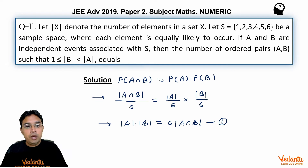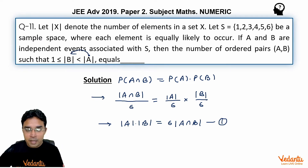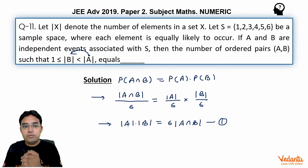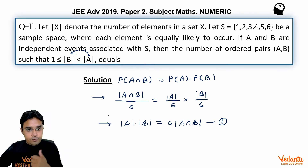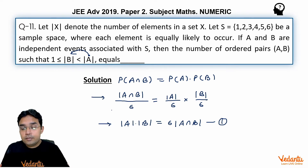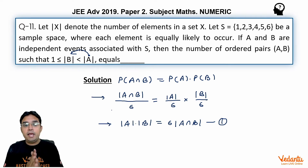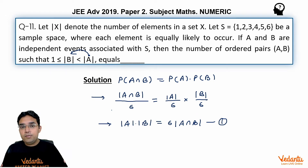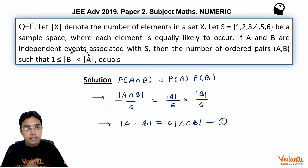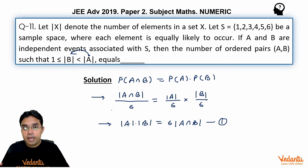We are given that A has more elements than B, and B must have at least one element. We can make cases by taking different values for |A|. Making cases for the number of elements in A turns out to be easier — let us see how.